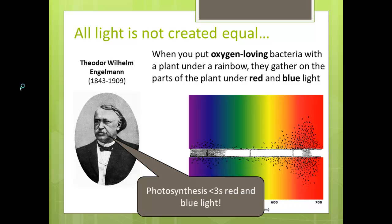Now we know that, for whatever reason, these two colors of light—red and blue—make photosynthesis happen in the strongest way and make the most oxygen.